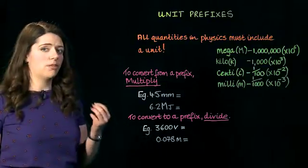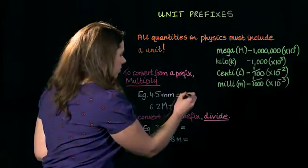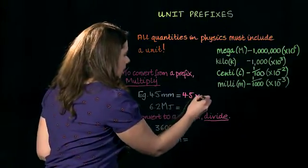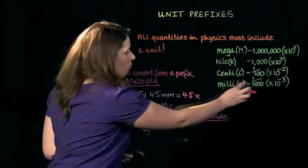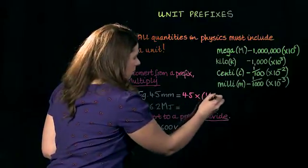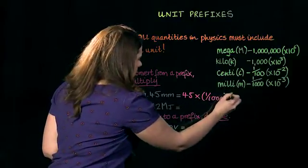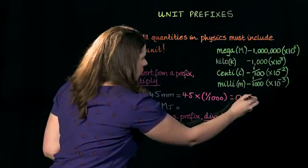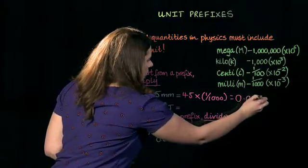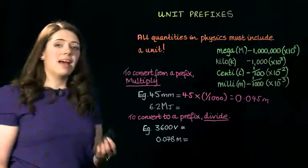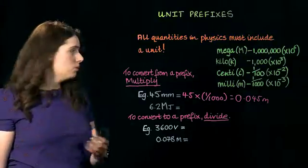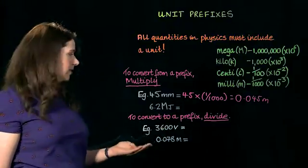I need to multiply by the value of a millimeter. So I do 45 times by the value of one millimeter, which is one one thousandth, and that will come up as 0.045 meters. That makes sense because a millimeter is quite small, so we'd expect this to be a small value of meters.